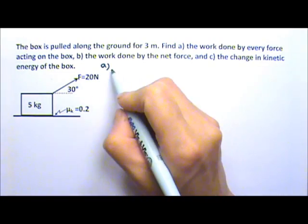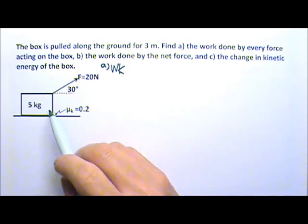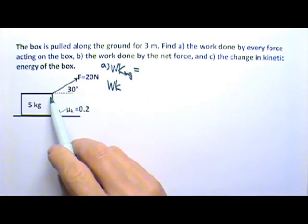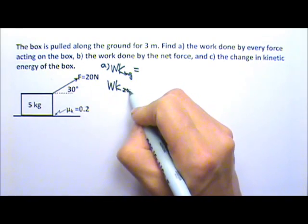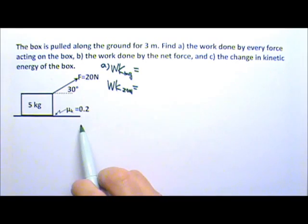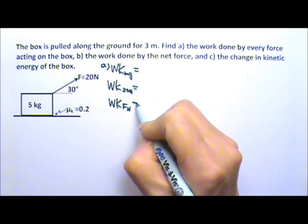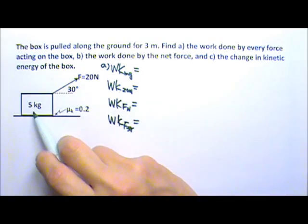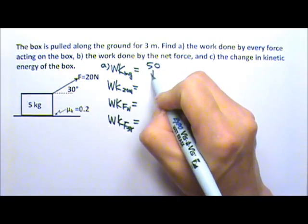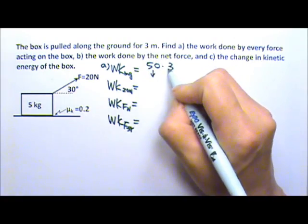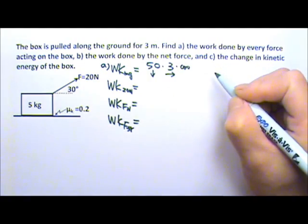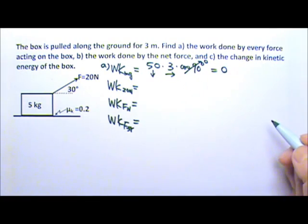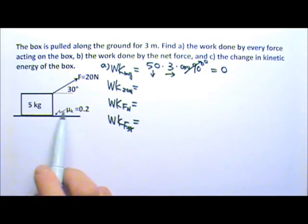For part A, we want to find the work done by every force acting on the box. There is the non-contact force Mg, the 20 N slanted force, and from the contact surface, we have normal force and friction. Starting with Mg: the box is 5 kg, so Mg is 50 N downward. The displacement is 3 meters to the right, so the angle between the two is 90 degrees, giving zero work. No work is done by Mg because it has no component along the displacement.